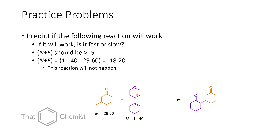In the first problem, I gave you these two different compounds: a Michael acceptor on the left and an enamine on the right. The question is, given these E and N parameters, we're supposed to predict whether or not the reaction will happen. Looking at this enamine with an N of 11.4, we put that into our equation and subtract the E parameter value of our electrophile, which is minus 29.6. From this we get a net of minus 18.20. As this reaction has to have an N plus E ideally above minus 5 for any reaction to occur, we can see that this reaction will never occur.